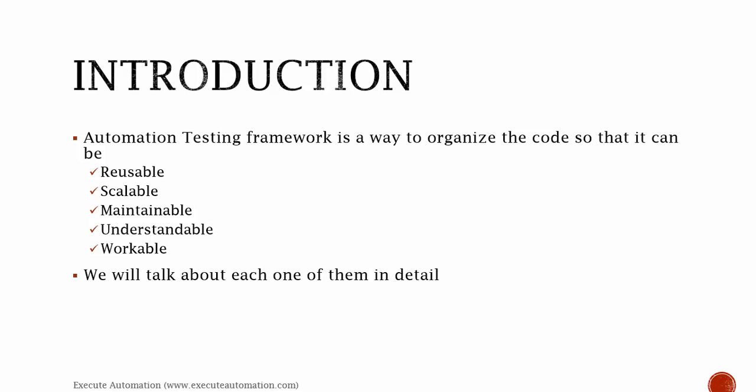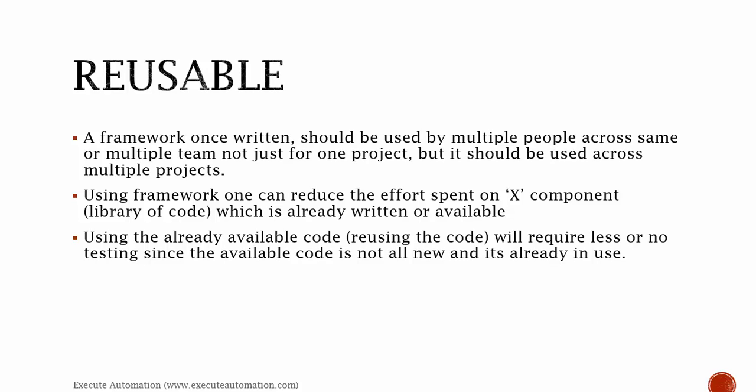If these properties are there in your automation testing framework, then you have written a best framework. Reusable: a framework once written should be used by multiple people across the same or multiple teams — not just for one project, but across multiple projects. We should develop a framework keeping multiple projects in mind, supporting multiple technologies, and the framework should also be able to run on the same project by multiple people.